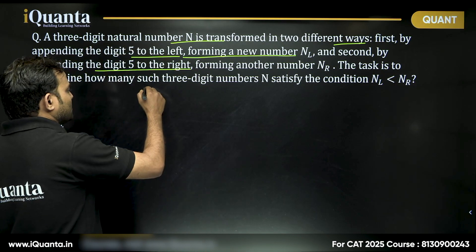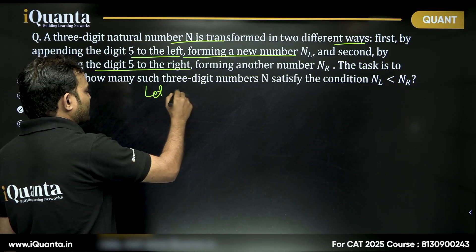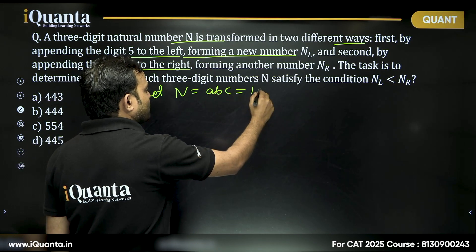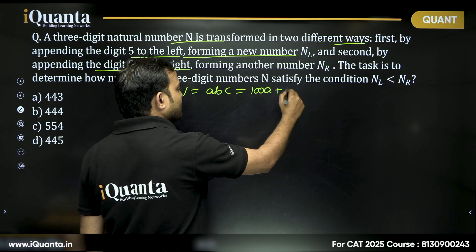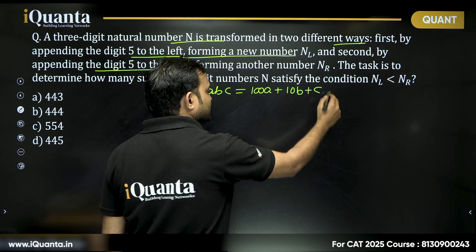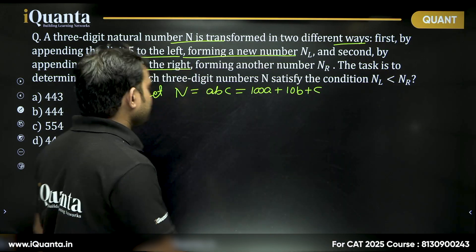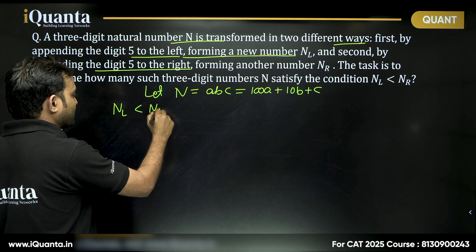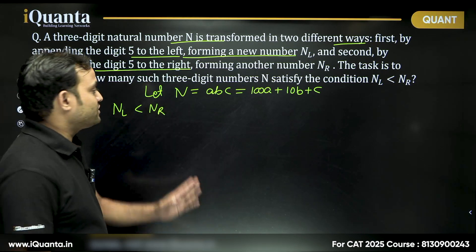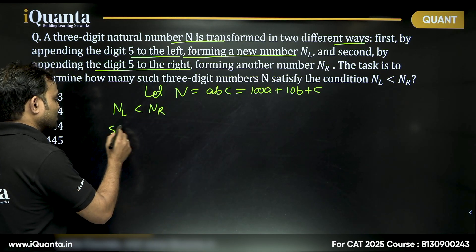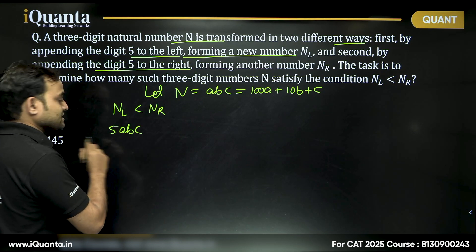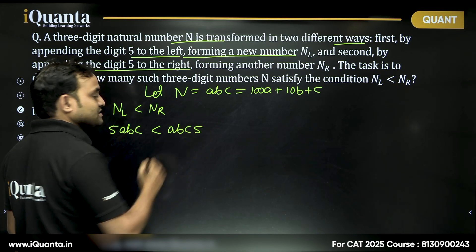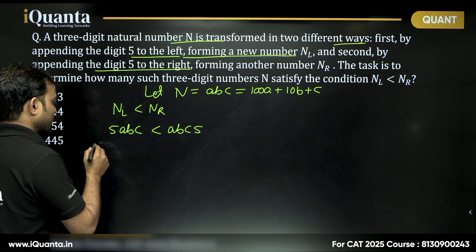Now, let us say that our number n which is a three-digit number abc which while expanding we can write 100A plus 10B plus C. Now, it is given that nL is less than nR. What is nL? If we add 5 to the left of abc, this is a four-digit number and what is nR? abc 5. This is a four-digit number again.